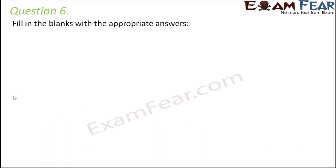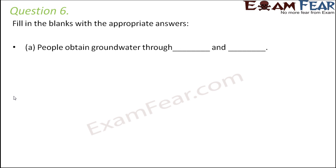Question number 6: Fill in the blanks. People obtain groundwater through tube wells and hand pumps. Tube wells use groundwater and bring it up for our use, and hand pumps are another device that helps us obtain groundwater.